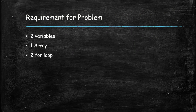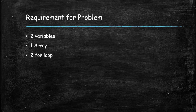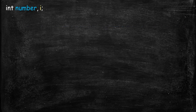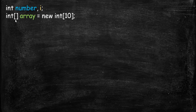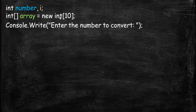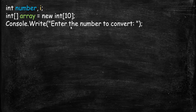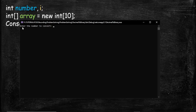To make this program we will need two integer variables and one integer array, and two for loops. The first for loop will be used for inserting values into the array, and the second for loop will print those values on the screen. In the code, the first variable is the number and the second is i, which we use in the loop. We also declare an integer array with an index up to 10, and print the line "enter the number to convert".